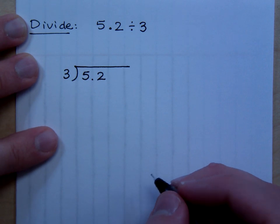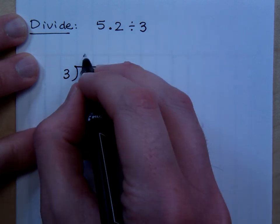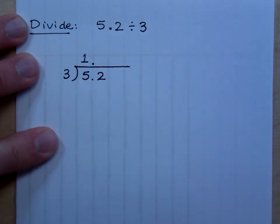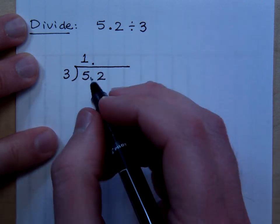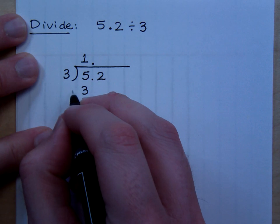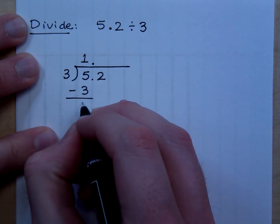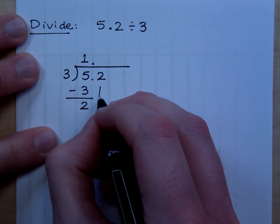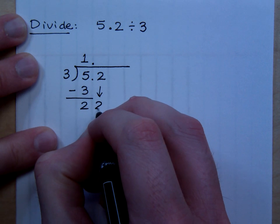So, does 3 go into 5? 3 goes in here once. Bring up that decimal point so you don't forget about it. So, 1 times 3 is 3. You get a remainder of 2. And bring down the 2.